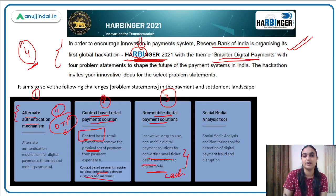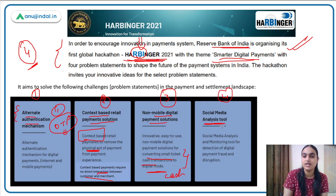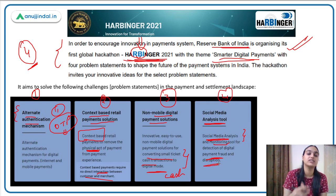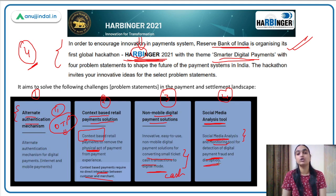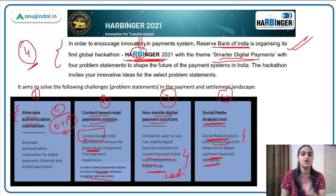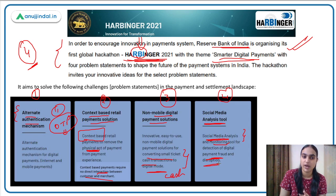The fourth and last problem statement is a social media analysis and monitoring tool. This tool will help deal with the problem of fraud causing disruptions in the payment system. A lot of frauds are happening and cybersecurity is a threat, so solutions are invited to ensure proper protection of customers. These are the four major problems for which innovative solutions are being sought.